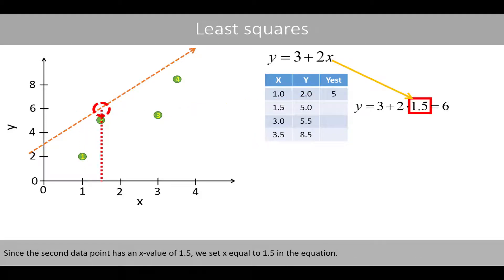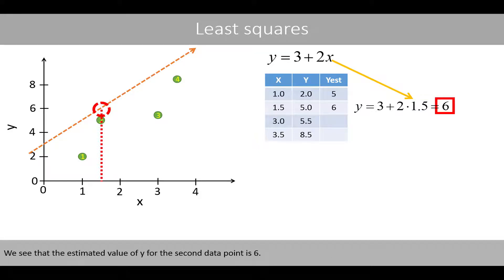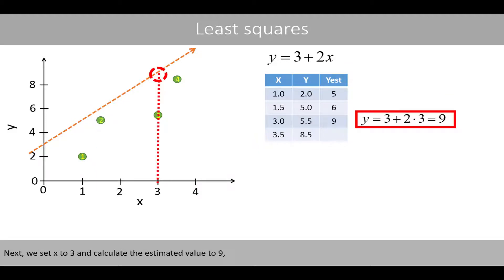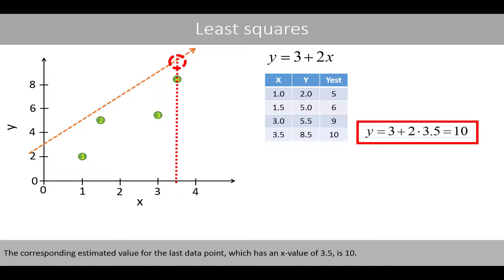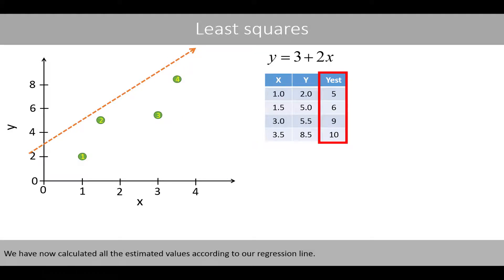The second data point has an x value of 1.5. We therefore set x equal to 1.5 in the equation, and the estimated value of y for the second data point is 6. Next, we set x equal to 3, and calculate the estimated value to 9. The corresponding estimated value for the last data point, which has an x value of 3.5, is 10. We have now calculated all the estimated values according to our regression line.